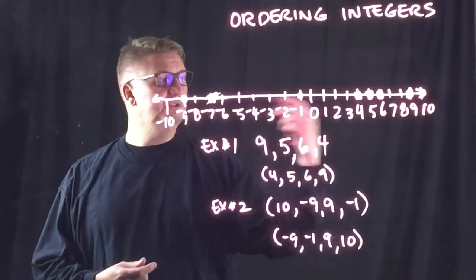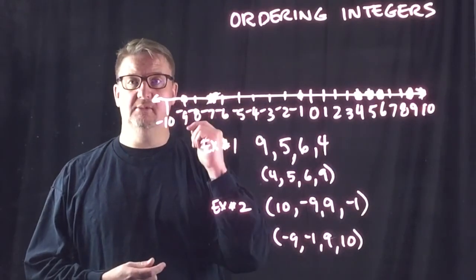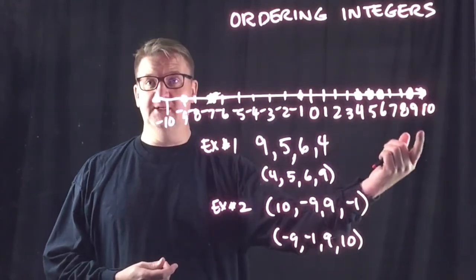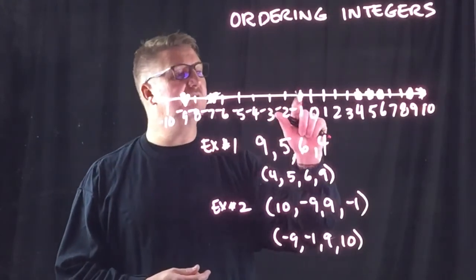If I were to go the reverse, it would be 10, 9, negative 1, negative 9. That would be from greatest to least. Let's look at one more example.